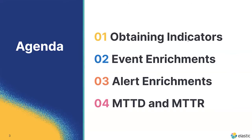Let me go over the agenda for my talk. In the first section, we have obtaining indicators, where I'll talk about how we create Threat Intel pipelines. In the second section on event enrichments, we'll cover how events are enriched using indicator match rules executed by the detection engine. For alert enrichments, we'll see how any alert from any detection rule can be enriched. Finally, we'll look at how these features help reduce mean time to detect and mean time to remediate.